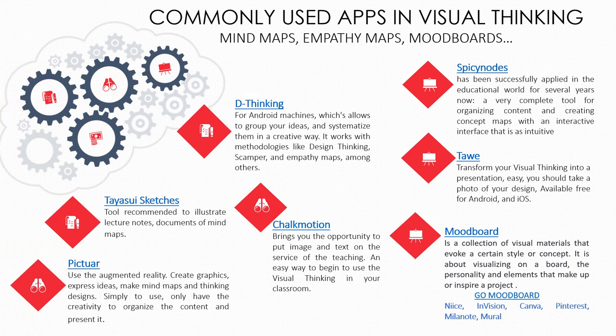Once the benefits and virtues of the applications or educational resources have been recognized, we will have a list to deliver to our students to face the requested task and be able to recommend the most appropriate ones judiciously. On a white background, a comic thought bubble in grey shows gear wheels of different sizes, highlighting four that contain icons of a notebook, binoculars, a blackboard, or money. Seven visual thinking applications are presented in a diagonal direction.